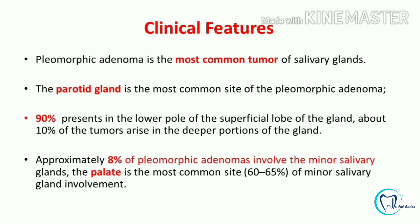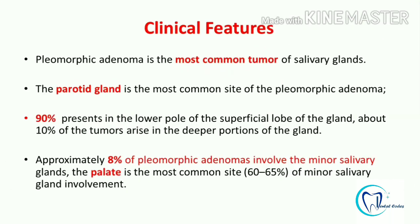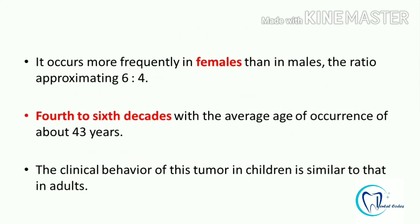When we talk about the clinical presentation, pleomorphic adenoma is the most common tumour of the salivary gland. The most common site is the parotid gland. In the parotid gland, 90% of cases are associated with the lower pole of the superficial lobe and 10% are seen in the deeper portions. Pleomorphic adenoma is also seen in minor salivary glands, where the palate is the most common site. Regarding gender predilection, all salivary gland tumours — except a few exceptions — are more common in females. The most common age of occurrence for pleomorphic adenoma is the 4th to 6th decade, and the clinical behaviour seen in children as well as adults is almost similar.